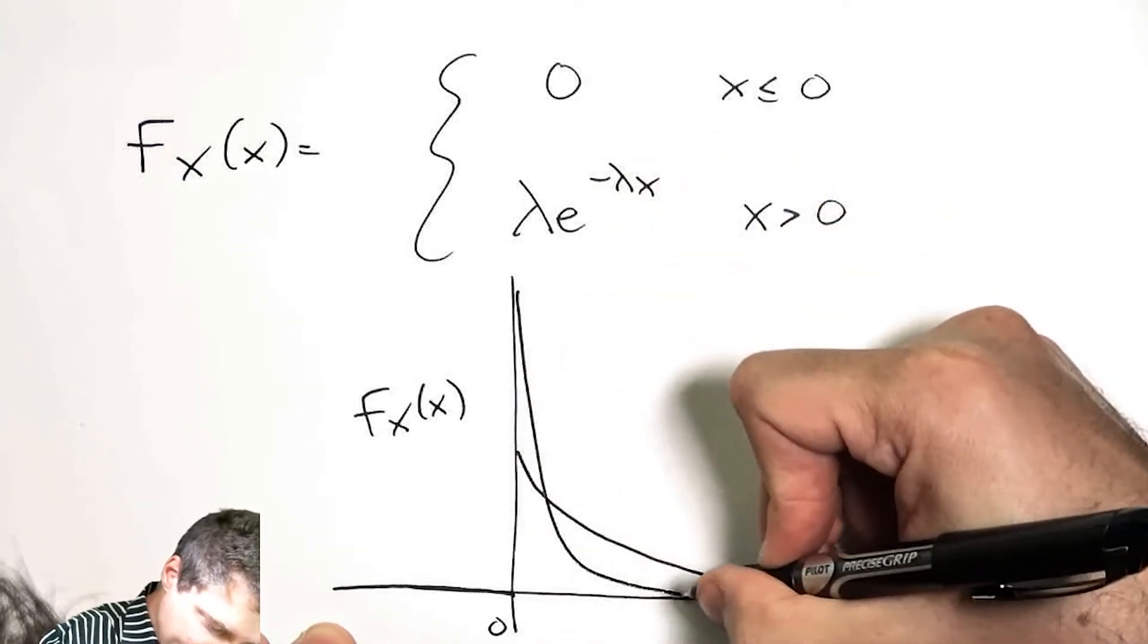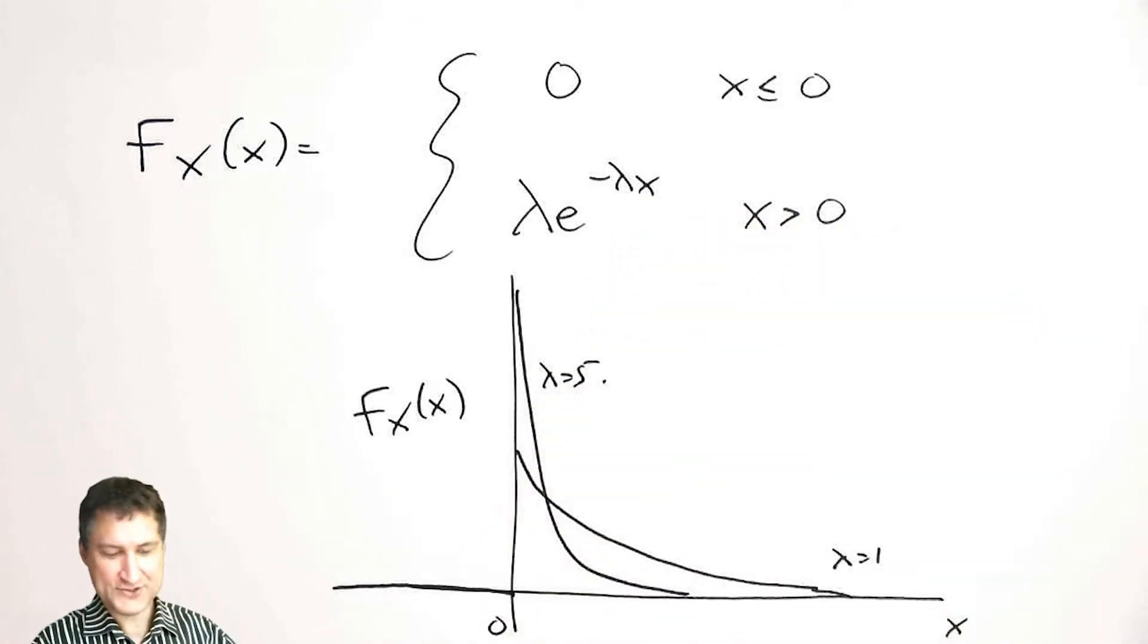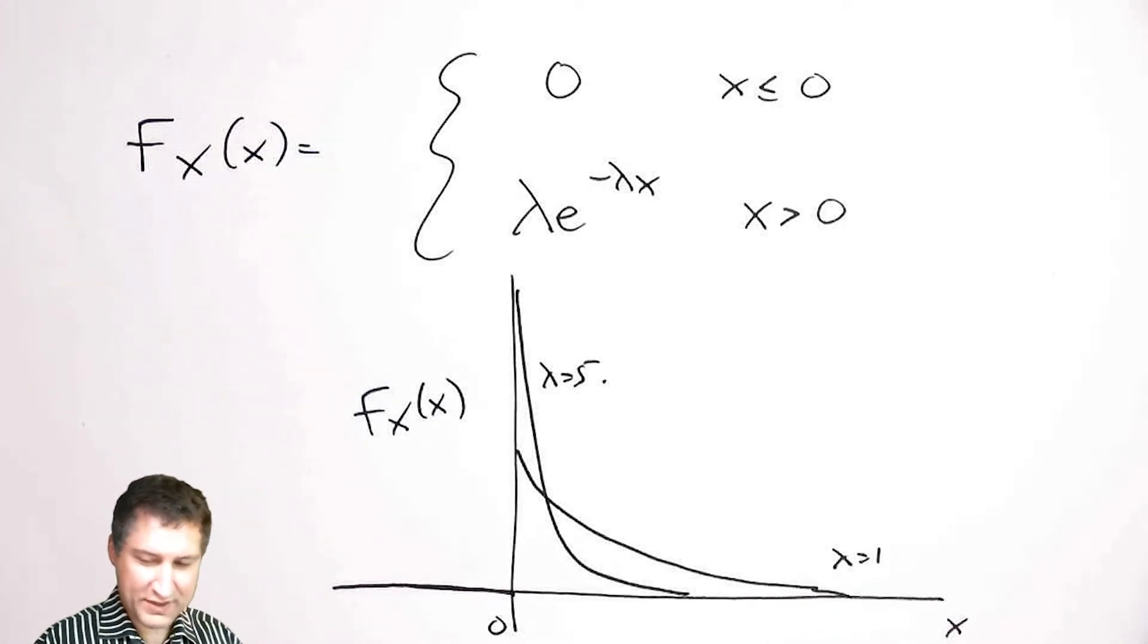That is slower for small lambda and faster for big lambda. Again, the idea is that when I have large values of lambda, probabilities of getting variables out here are pretty small.